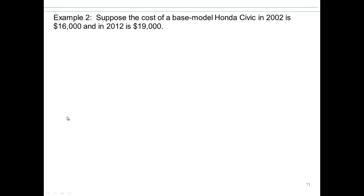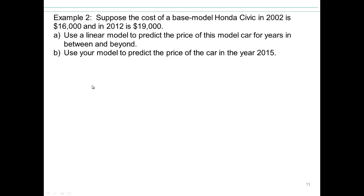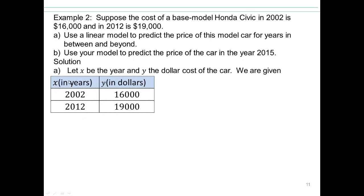Suppose cost of our base model Honda Civic in 2002 is $16,000. And in 2012, the base model Honda Civic cost $19,000. Use a linear model to predict the price of this model car for years in between and beyond. Use your model to predict the price of the car in 2015. So let's take a look.